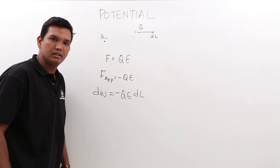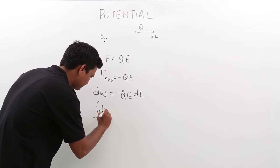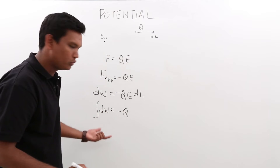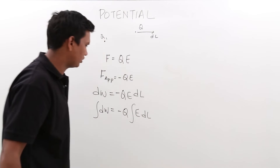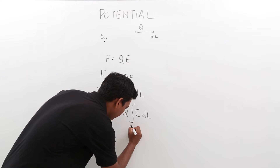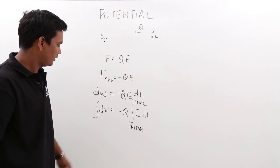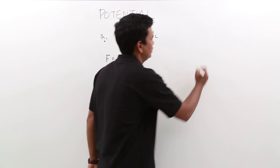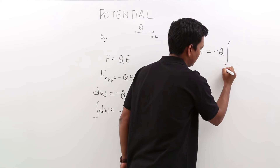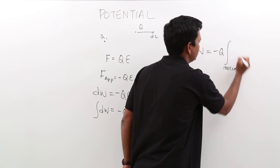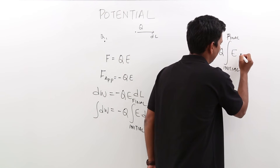Now, we know that the total work done would be given by the integration of this — q will be a constant. There have to be start and end points, so this will be from initial to final. The total work W would be equal to minus q times the integral from the initial point to the final point of E dot dl.